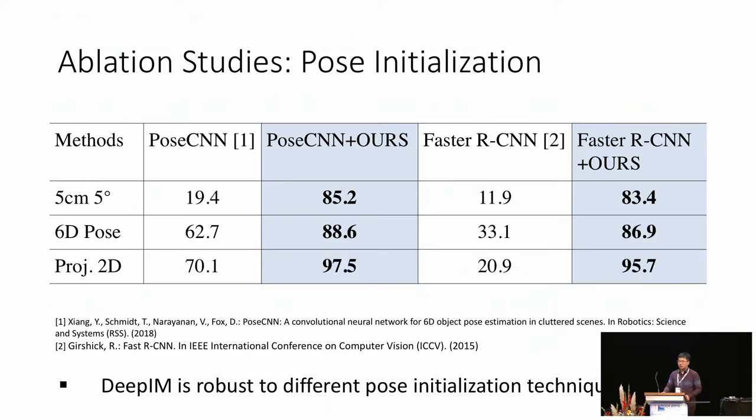We also showed that our method is robust to different pose initializations. Other than poses from PoseCNN, we modified Faster R-CNN in a simple way and got a set of poses which are much worse than those from PoseCNN. But if we refine these poses using our method, we can get similar performance. Notice that the network weights and the settings in these two experiments are exactly the same.